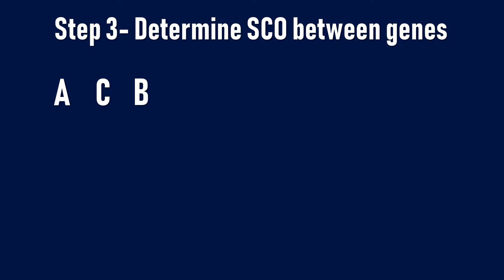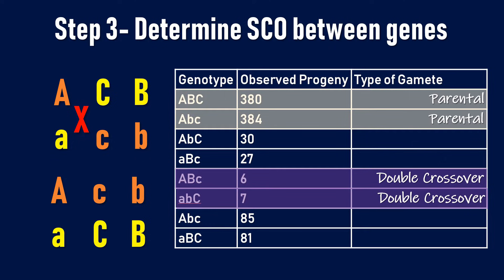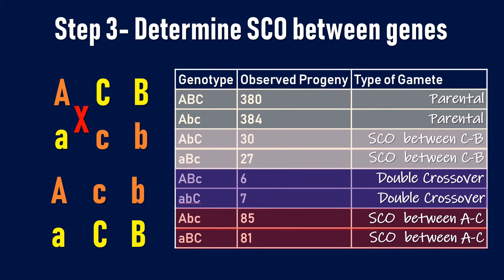The third step is to determine single crossover between the genes. Considering the gene order A, C, B, we will do a single crossover between the two parental types between genes A and C. The recombinants obtained will be capital A, small b, small c and small a, capital C, capital B. We then compare these recombinants with the table in the question. We find two recombinants satisfying this, so these two are single crossovers between genes A and C. Naturally, the remaining two genotypes are obtained by a single crossover between genes C and B.